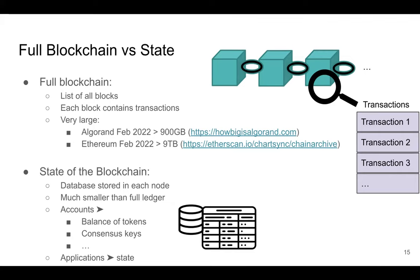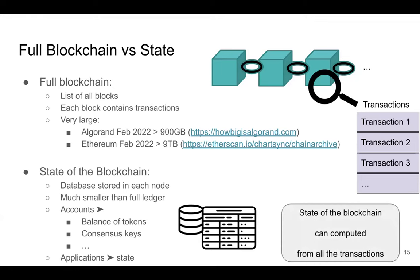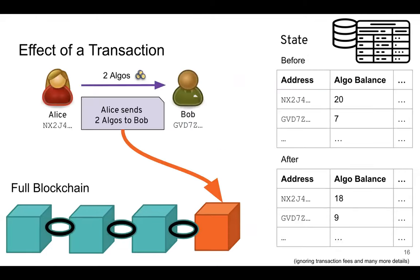The state of the blockchain is essentially a database representing the balances of all accounts and the state of all smart contracts. It's much smaller than the full ledger and can be computed from all the transactions. For example, suppose Alice has 20 Algos and Bob has 7 Algos — the state of the blockchain is a table where Alice has 20 Algos, Bob has 7, along with all other accounts and their balances.